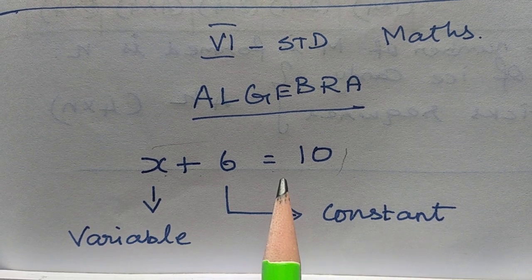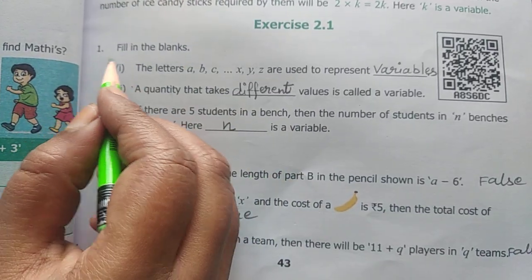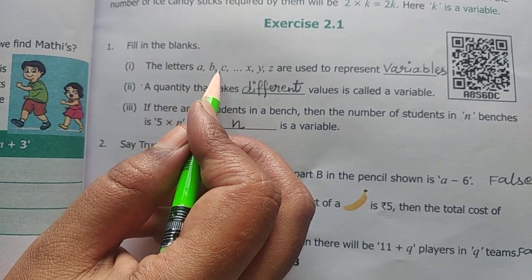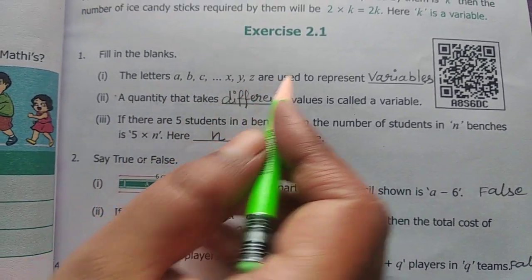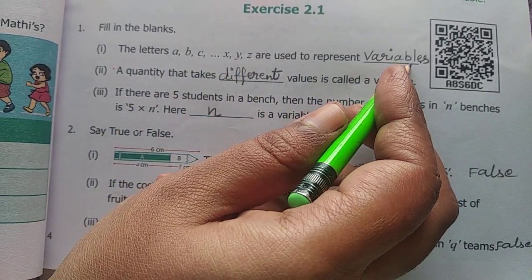Now you go to exercise 2.1. Exercise 2.1, first. First, filling in the blanks. The letters a, b, dot dot, x, y are used to represent... Already told, a, b, c, d are all variables and so on.